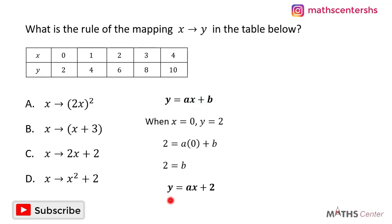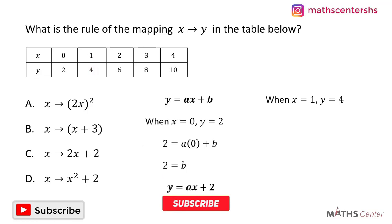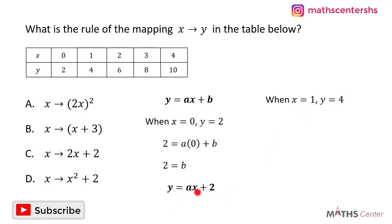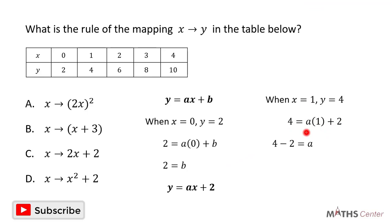Our rule is now y is equal to ax plus 2. Next, I need to find the value of a. I'll select another set of values: x equal to 1 and y equal to 4. Remember, our rule is now y is equal to ax plus 2. Substituting, we get 4 is equal to a times 1 plus 2. A times 1 gives us a, so we have 4 is equal to a plus 2.